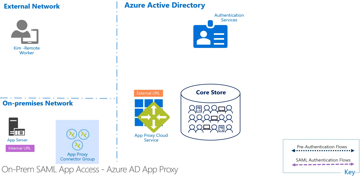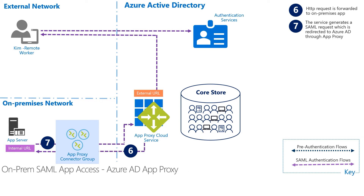Now that App Proxy has the token, it will forward an HTTP request to Tableau Server in step six. In this example, Tableau Server is a SAML app, and since there is no SAML token at play yet, the service sends a SAML request back in step seven. The App Proxy connectors pick up the request, which is directed back through the App Proxy cloud service. The App Proxy, in turn, renders the content back to Kim.